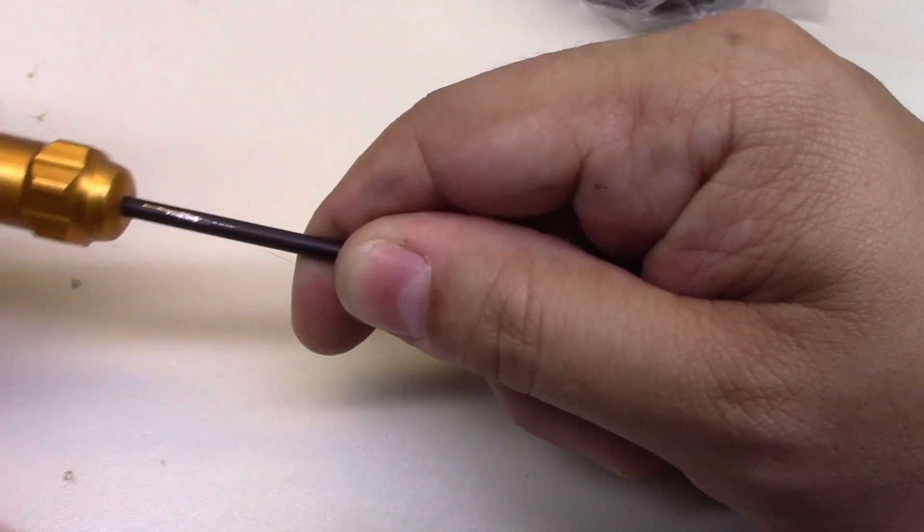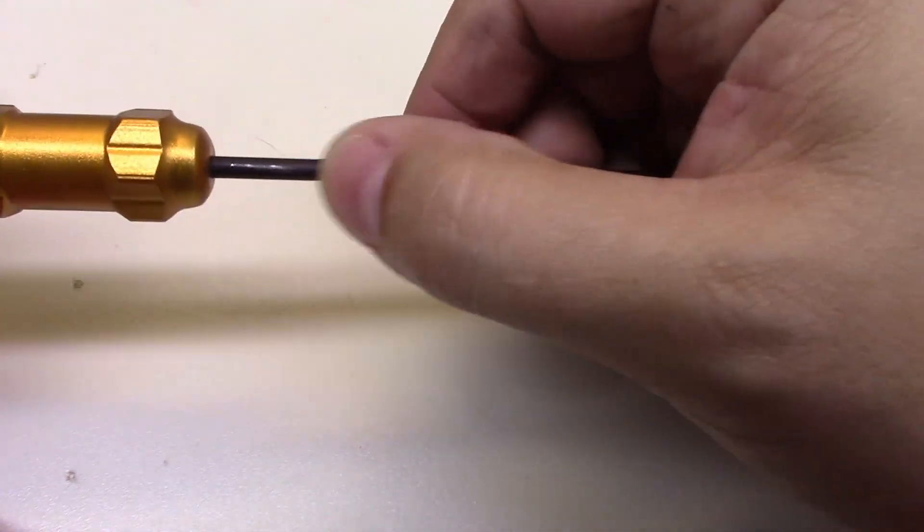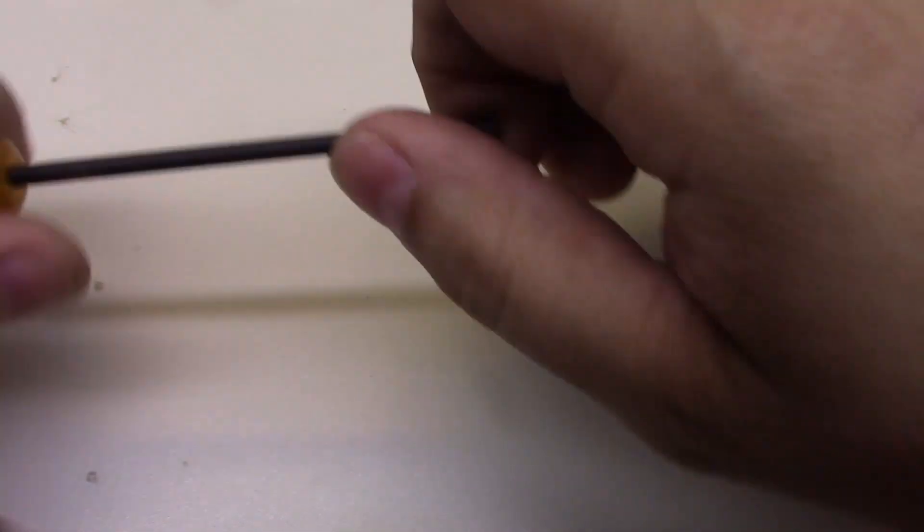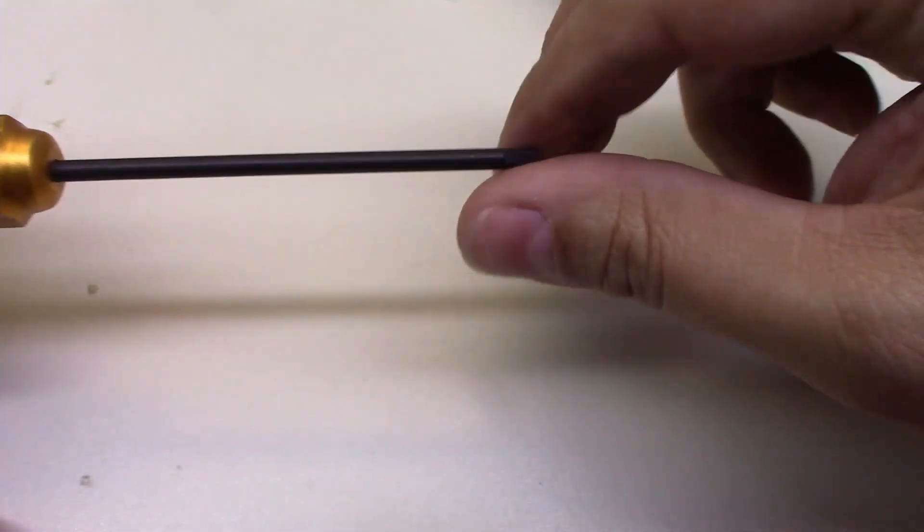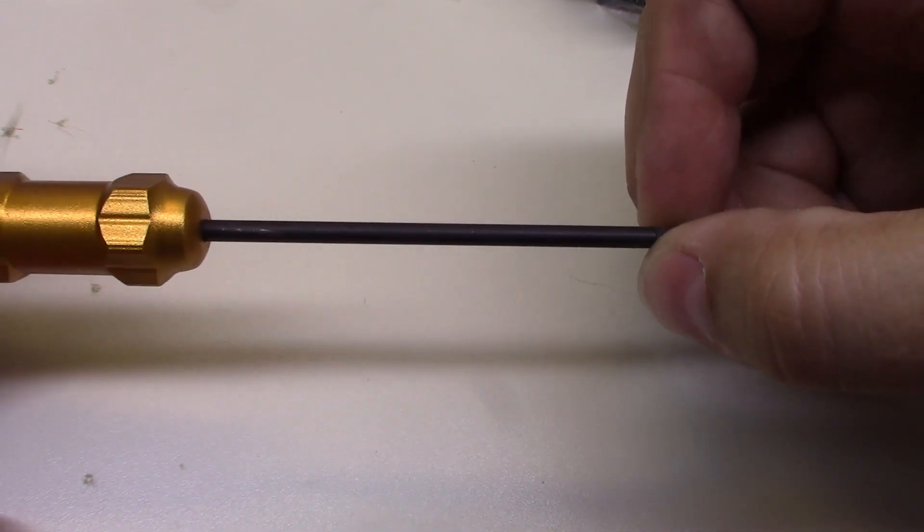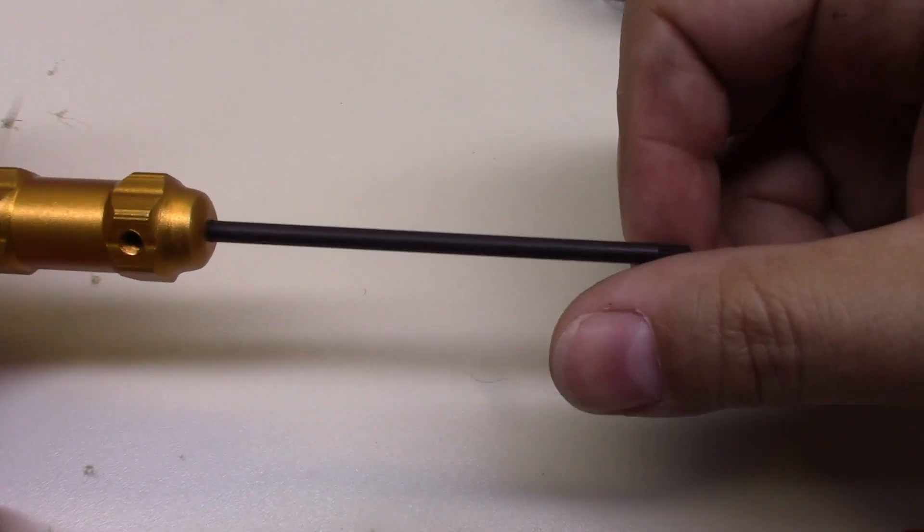So we'll call that a little under file hard. Maybe 50 Rockwell, 55 Rockwell, which is hard, plenty hard. So the only downside to that is these may be a little bit brittle, but for what you're going to be using them for, I highly doubt that that's going to be a problem.